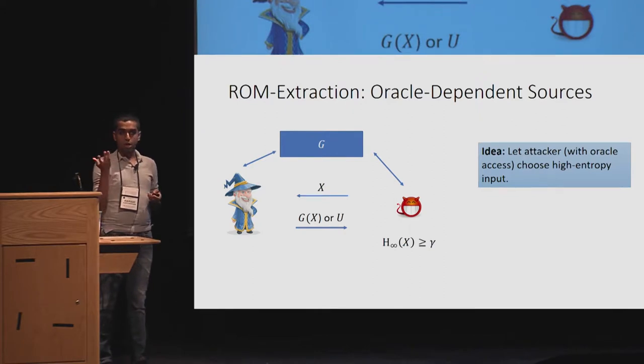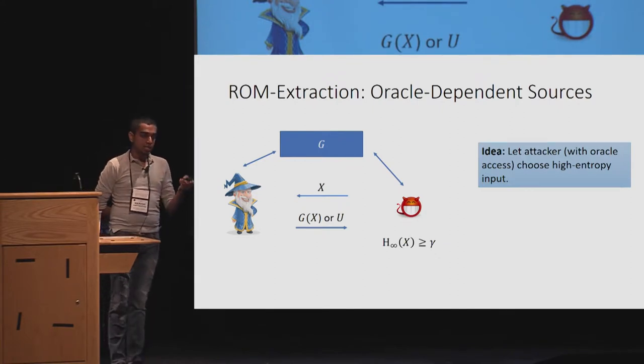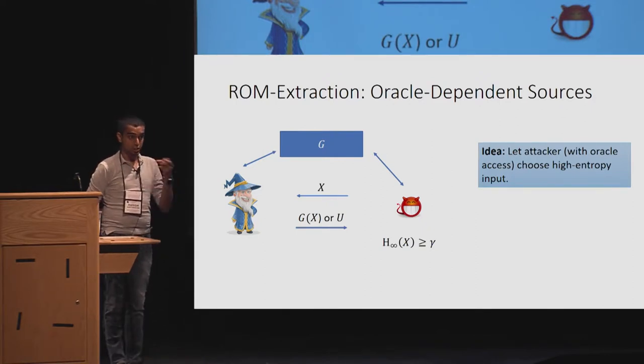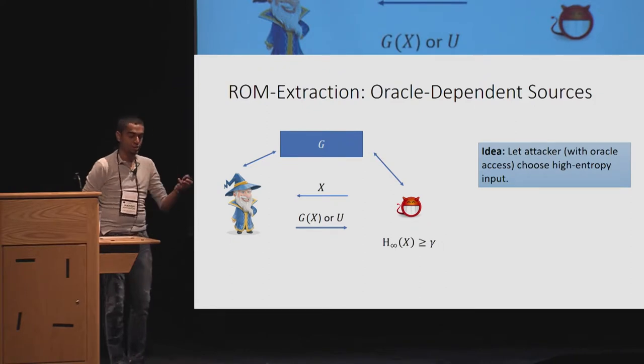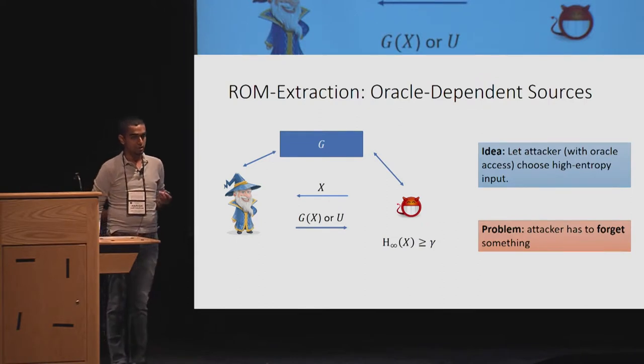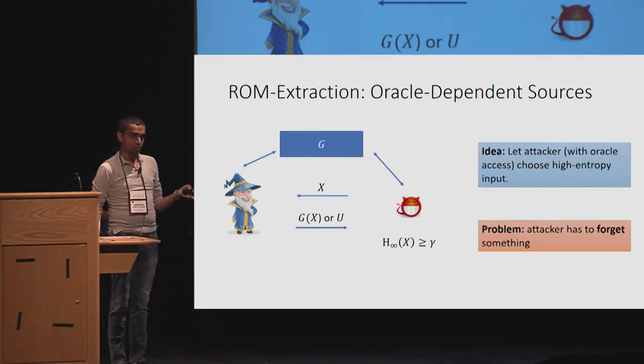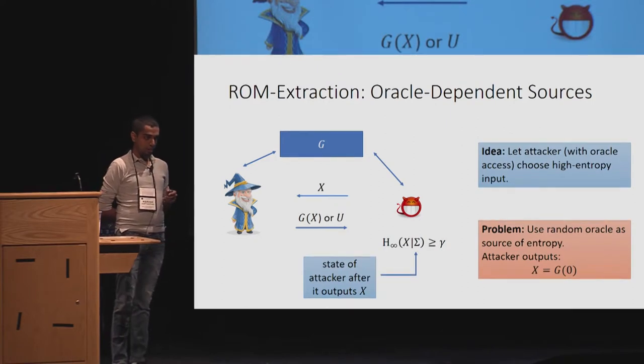The next logical step would be to look at oracle-dependent sources, where the idea is to let the attacker choose with oracle access a high entropy input. The setting is as before, it makes Q queries, it provides the X, and the challenger responds with G of X or U. What about the earlier assumption that we made when we said X has min entropy gamma, at least? Will that still work? Unfortunately, what this means is that for the outside world, X has gamma bits of entropy. It does not translate to the adversary not knowing X.